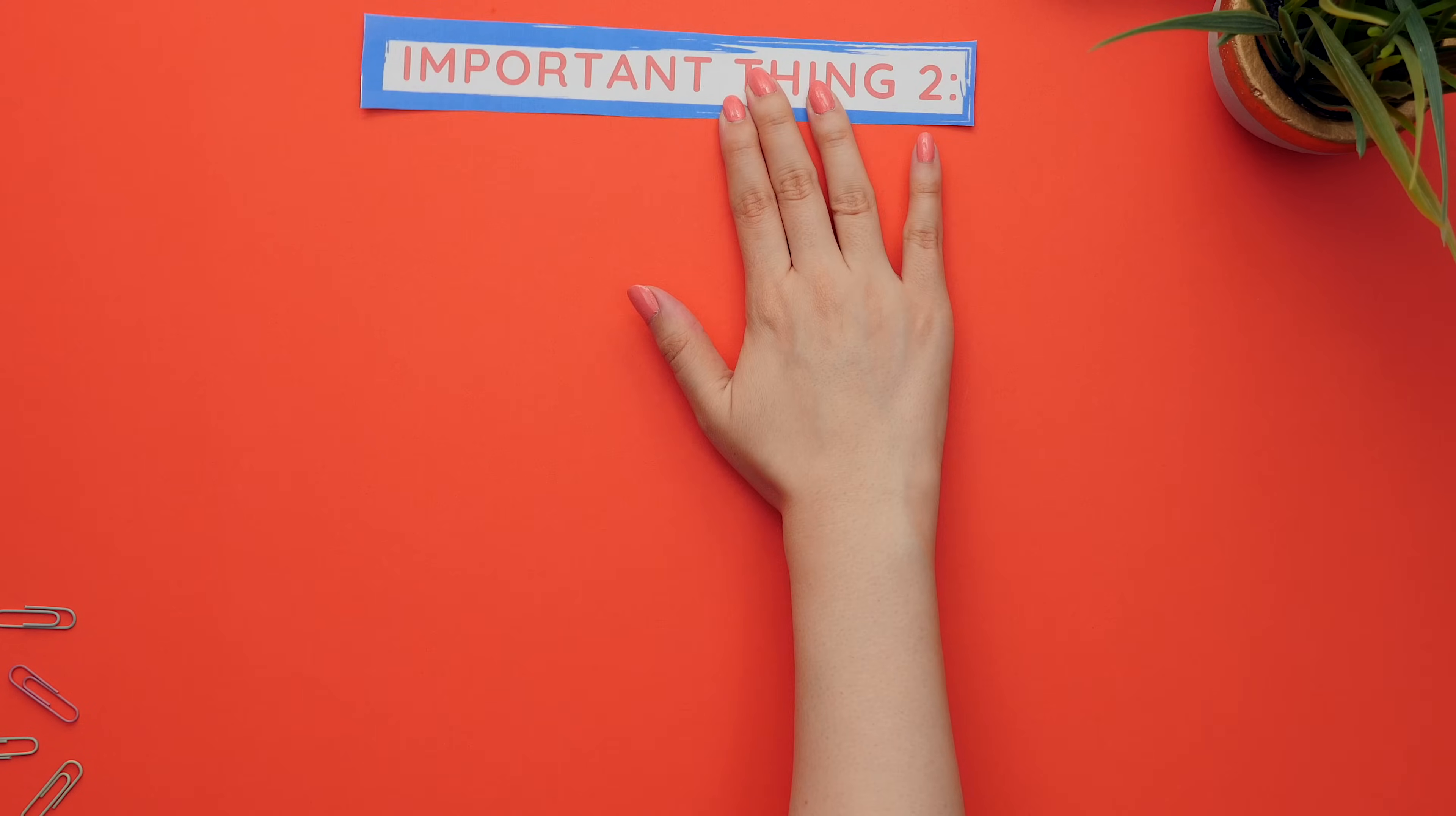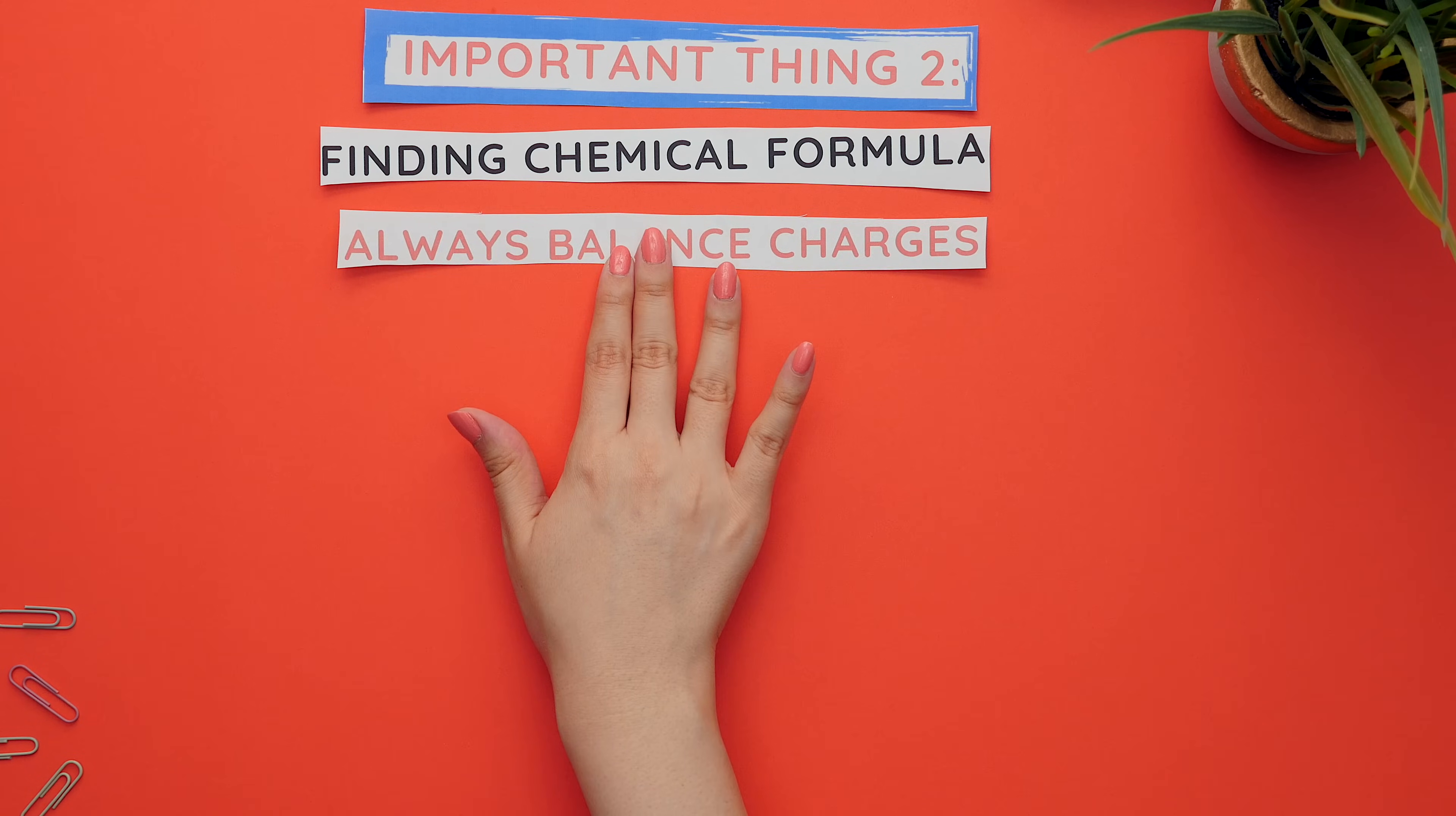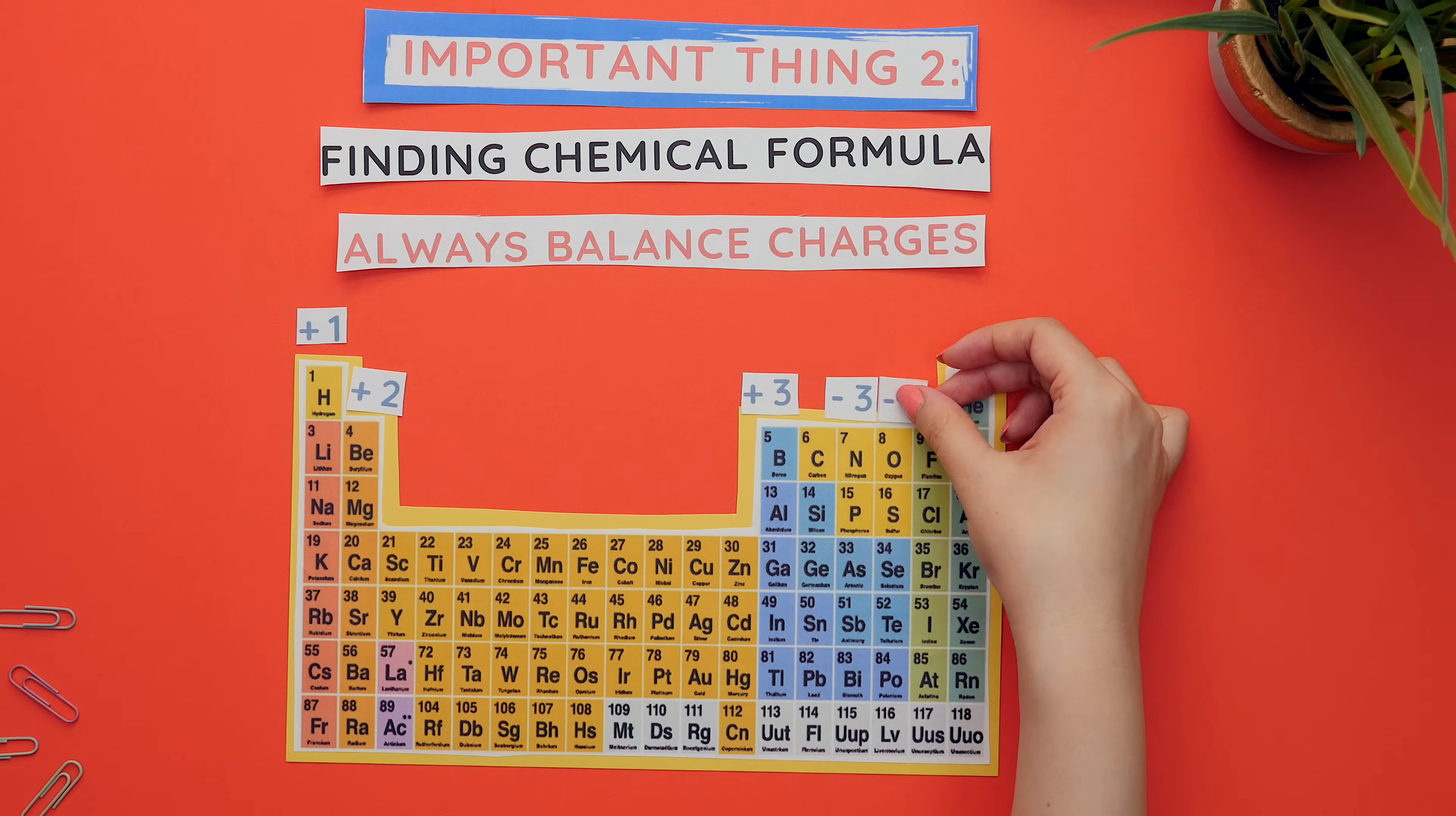Important thing two: when finding the chemical formula from the compound name, we will always have to balance out the charges for ionic compounds. These are the charges you will need to have memorized, so if you have to pause the video and write these down, please do so.